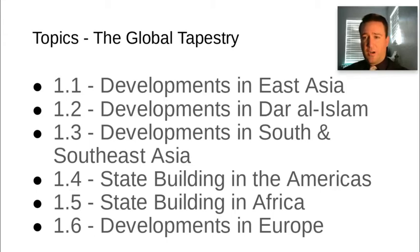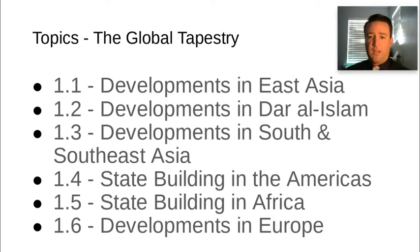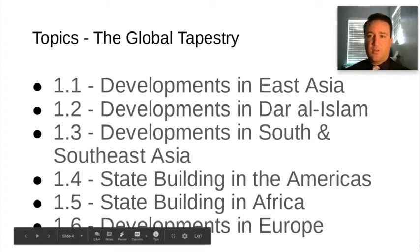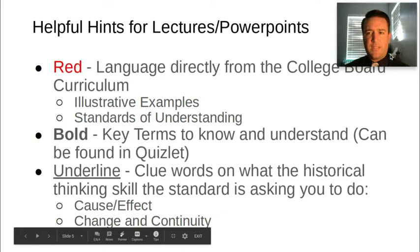Topic 1.1 starts with East Asia, then we move to the Middle East with Dar al-Islam — which covers all of Islam extending to North Africa, Spain, India, and Southeast Asia. Next is developments in South and Southeast Asia, then the Americas, Africa, and finally Europe — going region by region through what's happening during this time period.